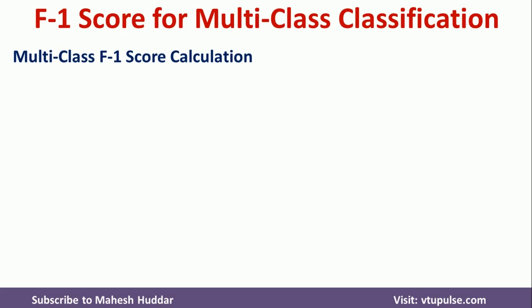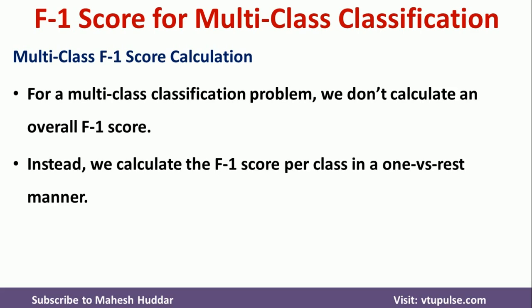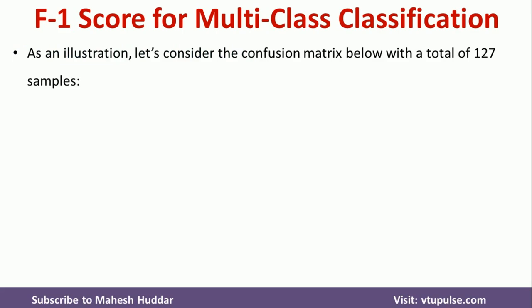Now we will understand how to calculate the F1 score for multi-class classification. We have to calculate the F1 score for each individual class using a one-versus-rest approach. We consider one class at a time and treat the remaining classes as the other side, then calculate the F1 score. Similarly, we repeat this for all other classes. We will take a simple example to understand this process.